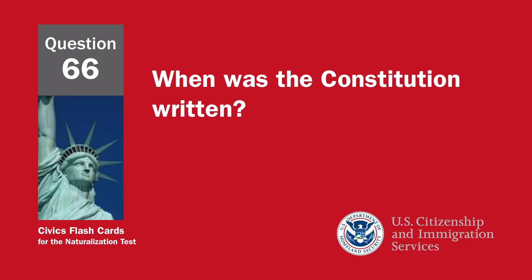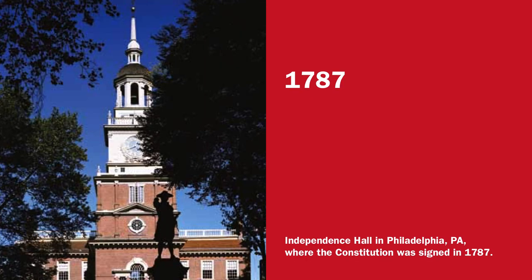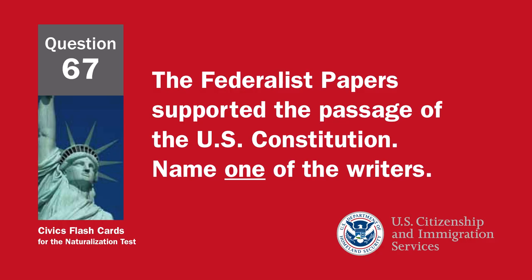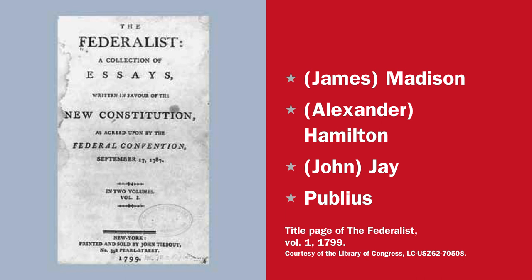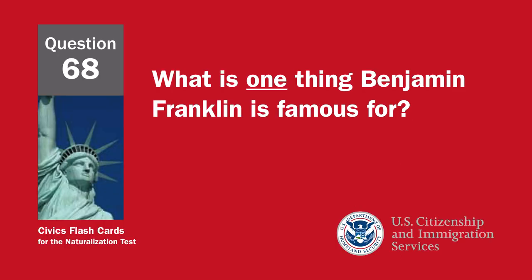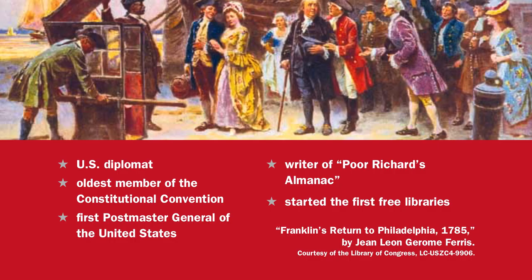When was the Constitution written? 1787. The Federalist Papers supported the passage of the U.S. Constitution — name one of the writers: James Madison, Alexander Hamilton, John Jay, or Publius. What is one thing Benjamin Franklin is famous for? U.S. diplomat, oldest member of the Constitutional Convention, first Postmaster General of the United States, writer of Poor Richard's Almanac, or started the first free libraries.